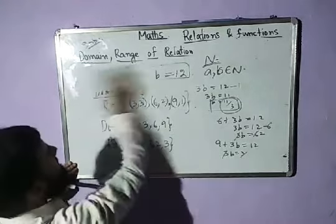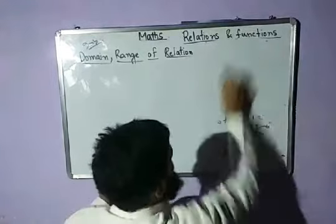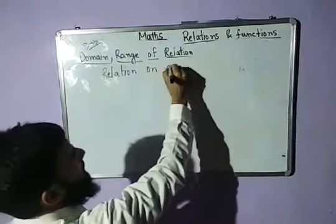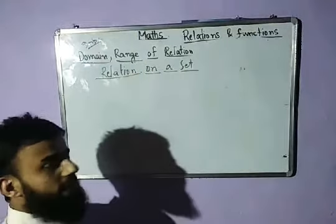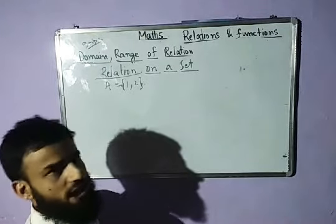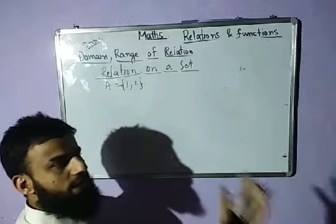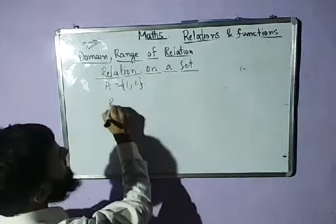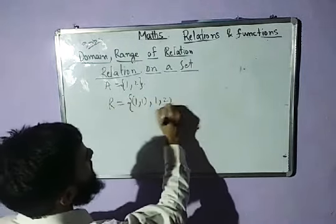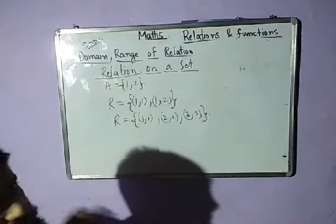Sometimes a relation is formed on a set with itself — this is called a relation on a set. For example, let A = {1, 2}. The elements of A are related to elements of A itself. One such relation could be {(1,1), (1,2)}, and another could be {(1,1), (2,1), (2,2)}.